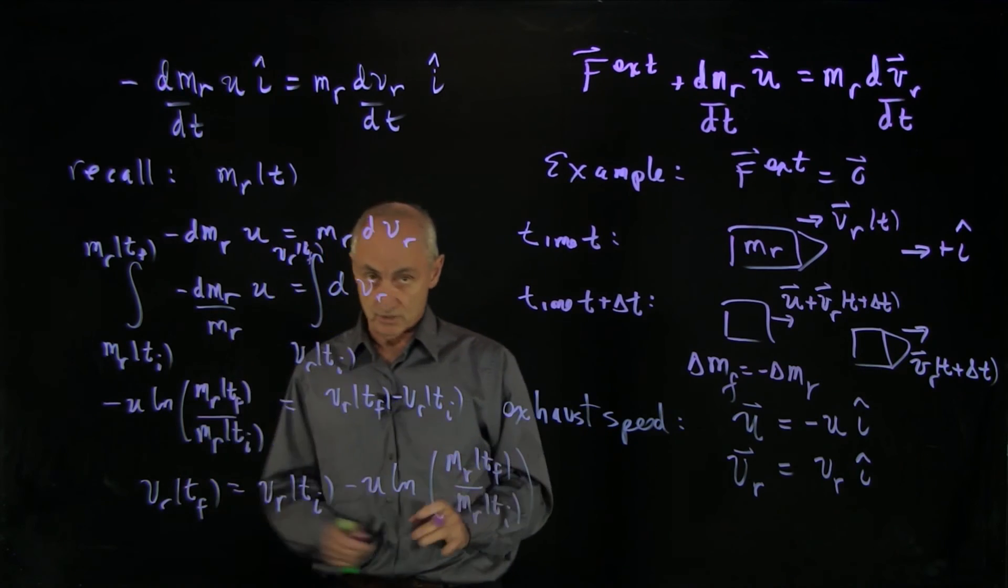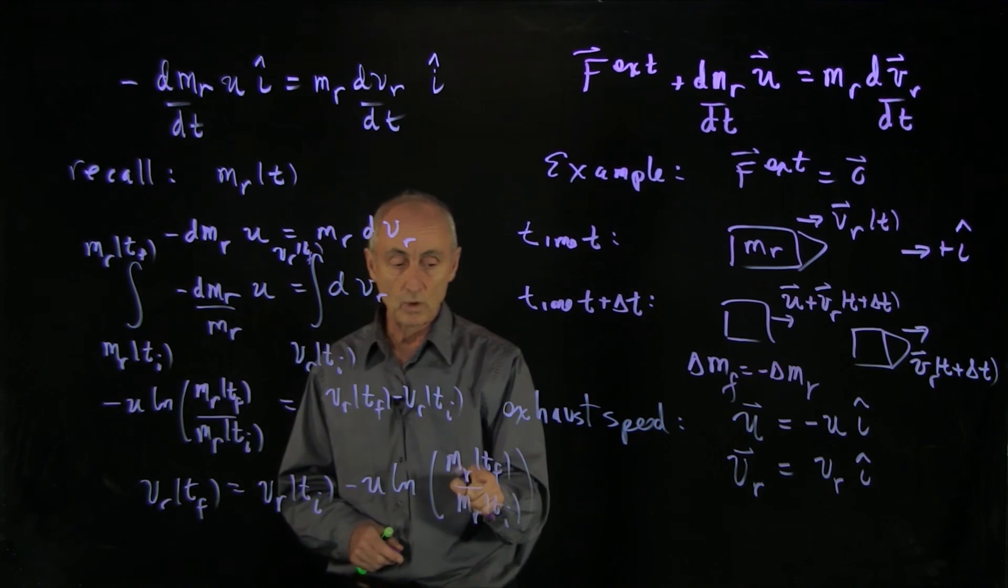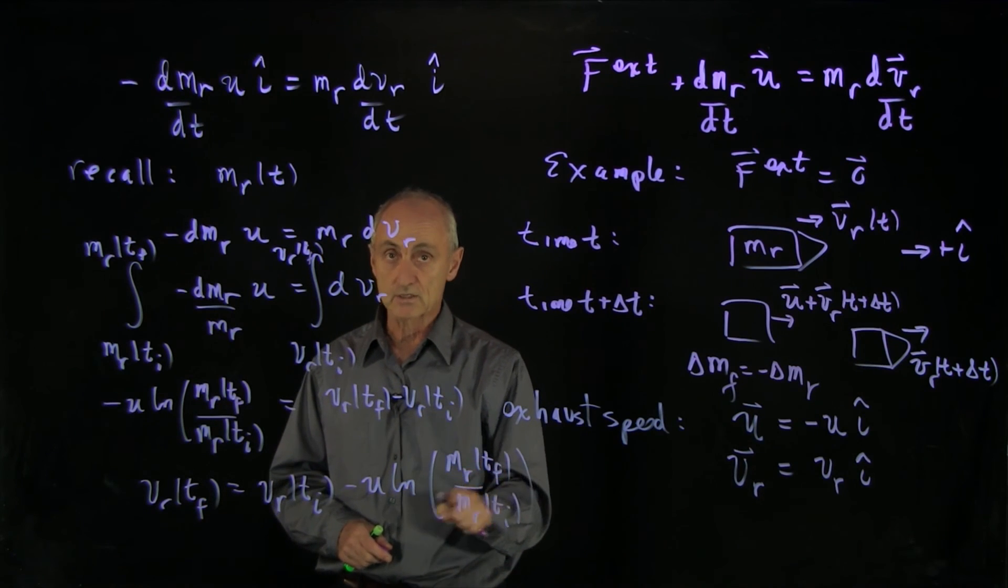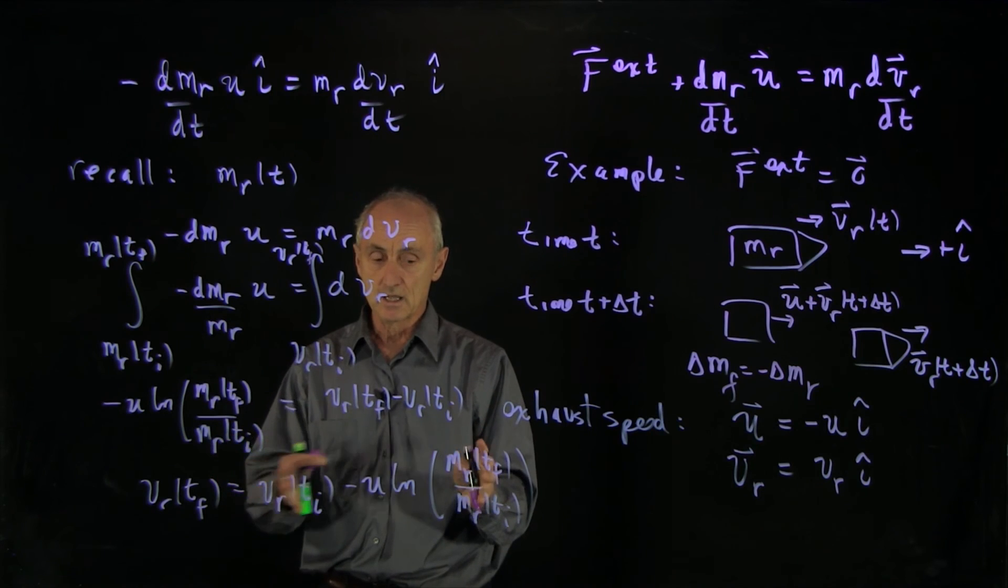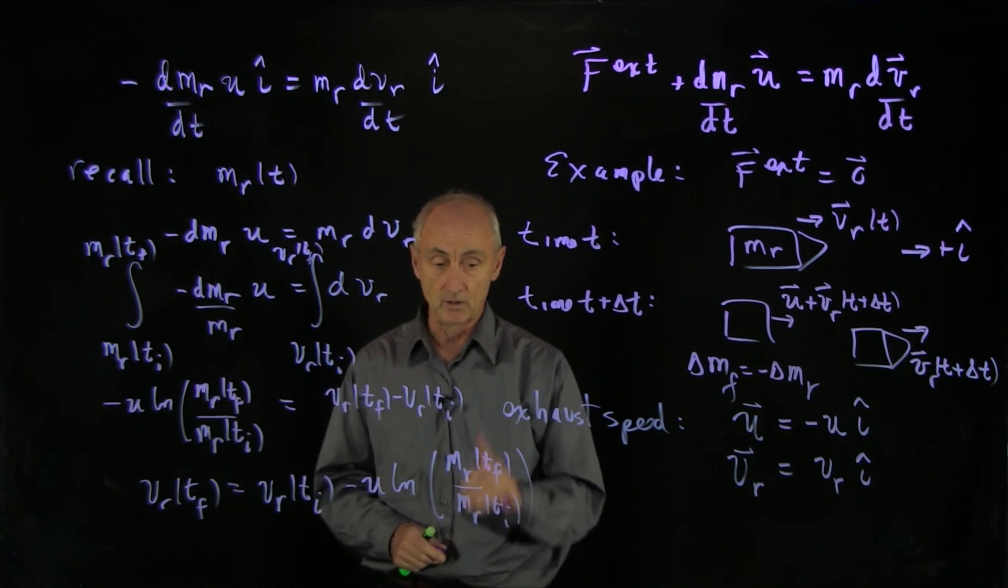Now, in our answer, we need to know what the mass of the rocket is at the final time. So in general, this equation is still not going to give us an explicit expression for v at t_final,